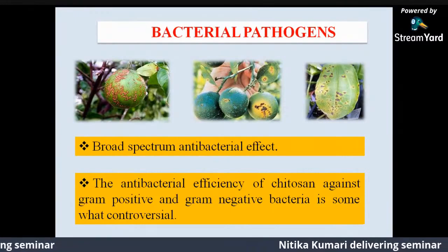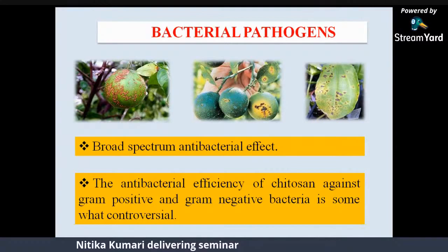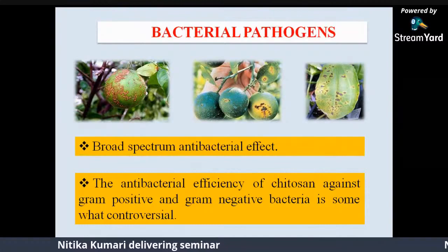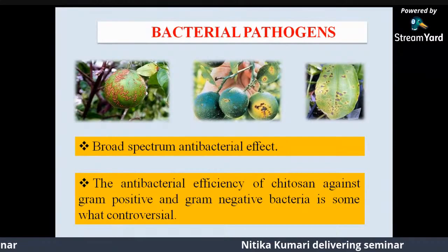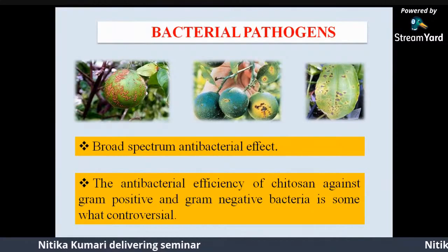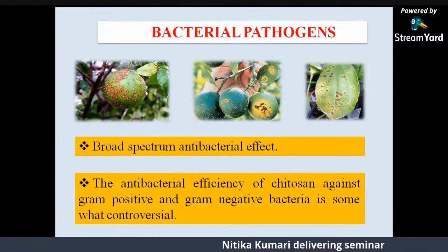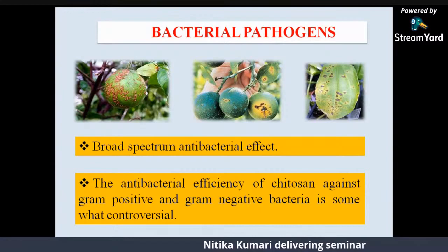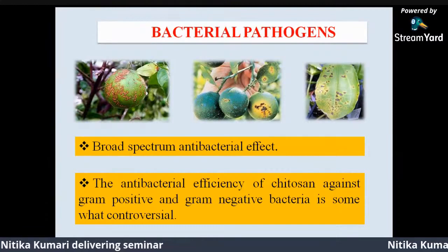Chitosan is also effective against bacterial pathogens. It is antibacterial in nature due to its bacteriostatic properties. The antibacterial efficacy of Chitosan against gram-positive and gram-negative bacteria is somewhat controversial. Scientists believe gram-negative bacteria have a thicker cell wall through which Chitosan cannot penetrate. However, another group of researchers believes that the gram-positive bacterial cell wall consists of phospholipids and lipopolysaccharides, imparting an overall negative charge. When polycationic Chitosan interacts with this negatively charged cell wall, it creates interactions leading to leakage of intracellular particles and molecules.